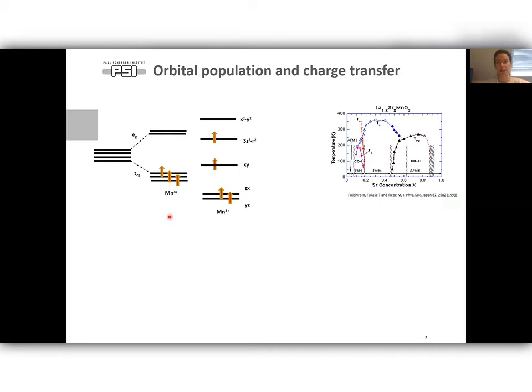Manganese 4 plus has the t2g band half full and manganese 3 plus has one electron at eg orbital. Degeneracy of the eg orbital could be broken by strain implementation or structural modification. It results in different electronic occupations of x-square minus y-square and 3z-square minus r-square orbitals. It forms additional magnetic ground state of LSMO and competition between antiferromagnetic and ferromagnetic states occur. So for us orbital occupation is an important parameter.